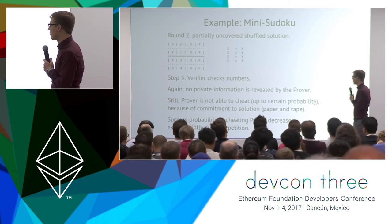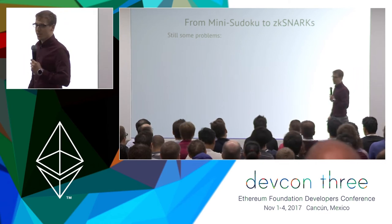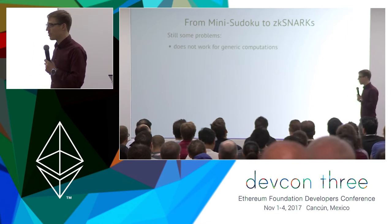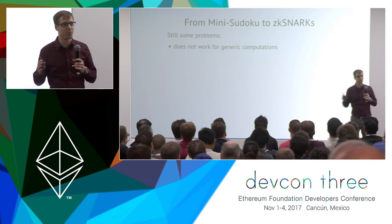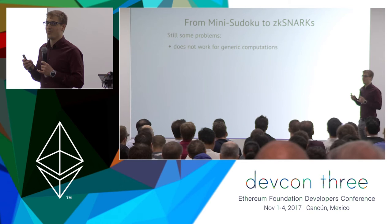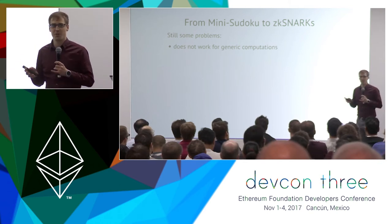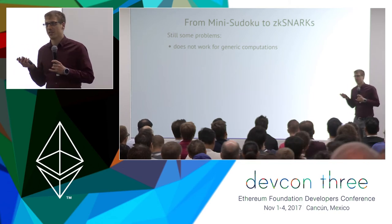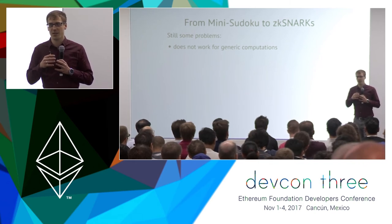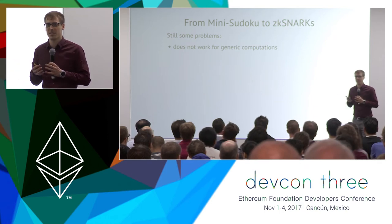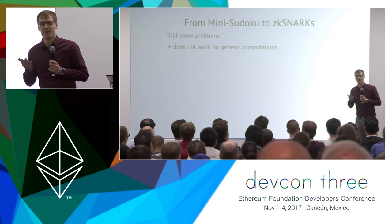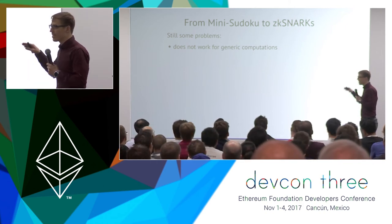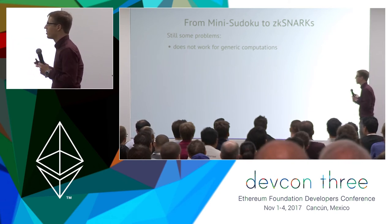This was Mini Sudoku. Moving from this example to ZK-SNARKs, Mini Sudoku still has problems. The first problem is that it doesn't work for generic computation — but actually, you can take any arbitrary computational problem and transform it into the Sudoku problem via a reduction, similar to compiling a program from a high-level language into machine language. This takes engineering work to make efficient, but the general problem is solved.